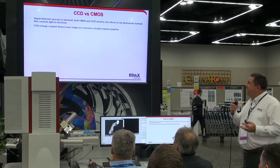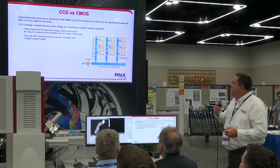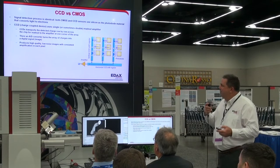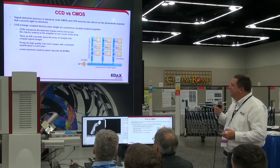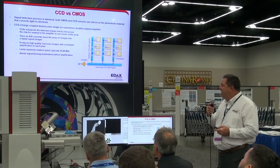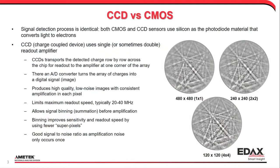Both technologies use silicon as the photodiode material to convert the light generated from the phosphor screen into electrons in the detection system. CCDs generally use a single readout amplifier — sometimes a double. The charge is shifted into a row, brought down to the amplifier, and rings out one row at a time. An A-to-D converter changes this into a digital signal, producing high-quality, low-noise images with consistent amplification at each pixel.